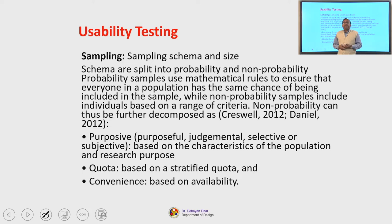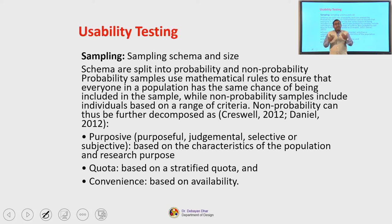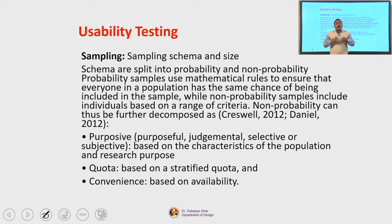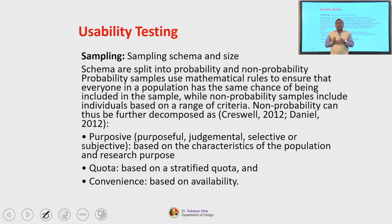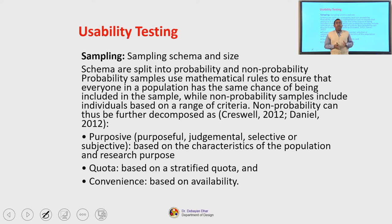There are different ways through which samples are recruited and that is what we call sampling — talking about sampling scheme and size. The sampling schema is split into two types: probability and non-probability. Probability samples use mathematical rules to ensure that everyone in a population has the same chance of being included in the sample, while non-probability samples include individuals based on a range of criteria. Non-probability samples can be further classified into purposive, quota, and convenience.